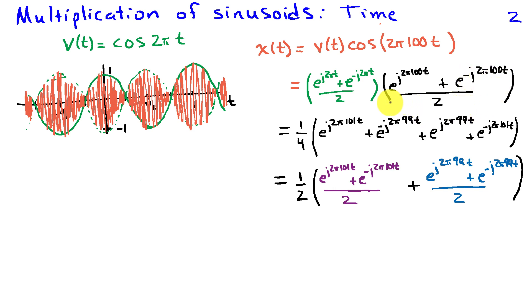We'll multiply each of the terms by using the FOIL acronym. First we'll take the first terms and since the product of exponents ends up summing the powers of those exponents, I'm going to have the sum of 2 pi t and 2 pi 100 t. I end up with the first term giving me e to the j 2 pi 101 t.